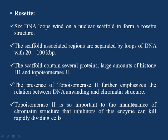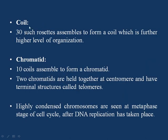The presence of topoisomerase II further emphasizes the relationship between DNA unwinding and chromatin structure. Topoisomerase II is very important for maintenance of chromatin structure, because inhibitors of this enzyme can kill dividing cells. The 30 nanometer fiber forms loop-like structures with a diameter of 300 nanometers. These loops are arranged around the nuclear scaffold to form rosettes, and 30 rosettes assemble to form a coil. Ten such coils form a chromatid, and two chromatids are held together at the centromere with terminal structures called telomeres.